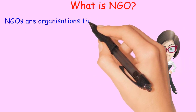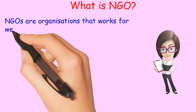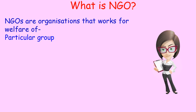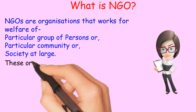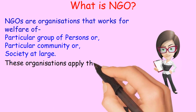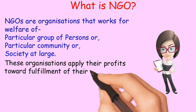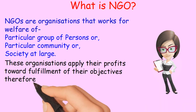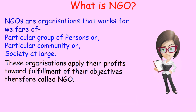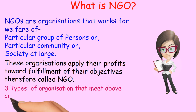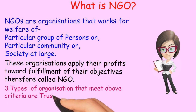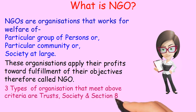NGOs are organizations that work for the welfare of a particular group of persons, a particular community, or society at large. These organizations apply their profits toward the fulfillment of their objectives, and therefore are called NGOs. Three types of organizations that meet the above criteria are Trusts, Society, and Section 8 Company.